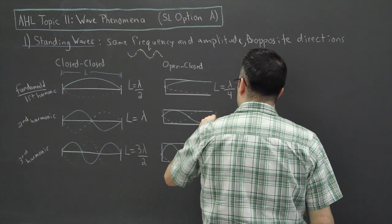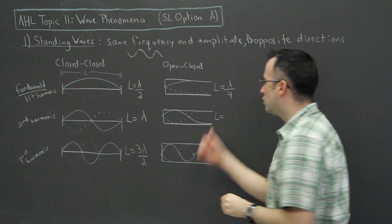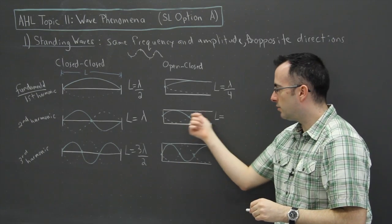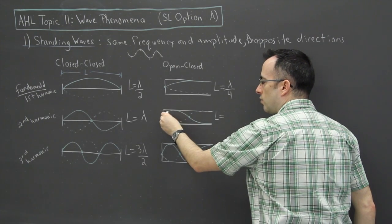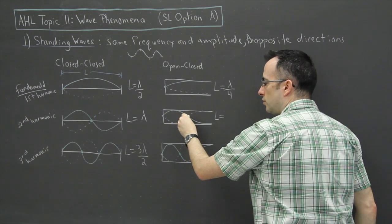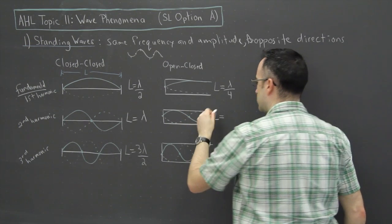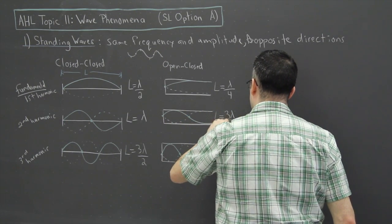This one right here, well, it helps to count in quarters because this may look a little bit weird here. So I'm going to count in fourths, in other words: one quarter, two quarters, three quarters. So three lambda over four.